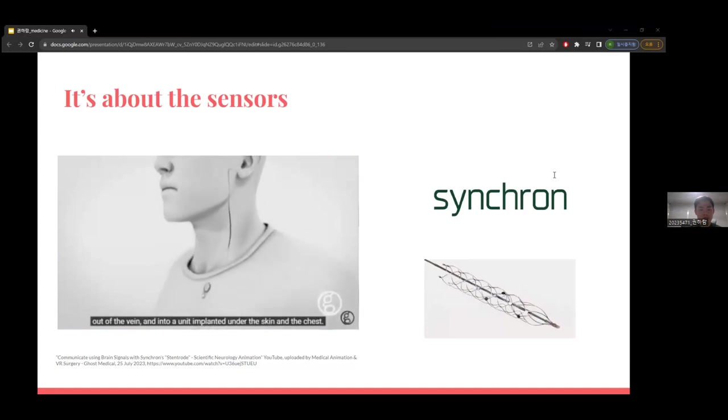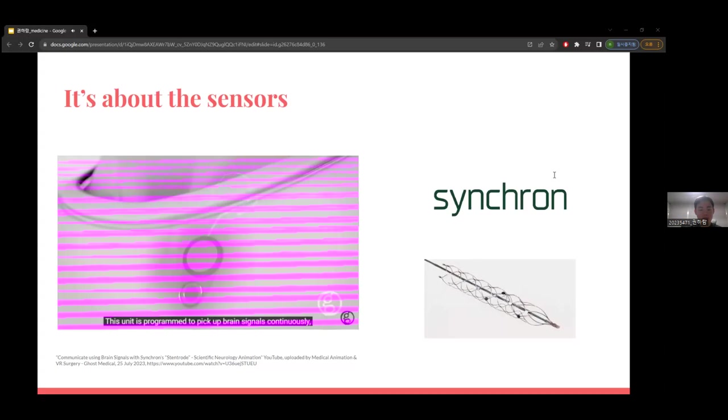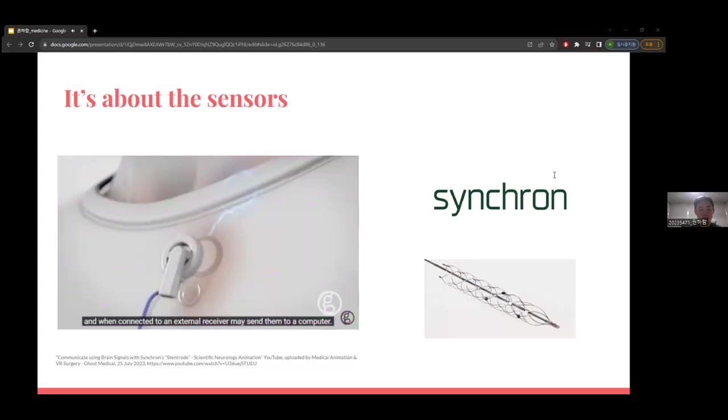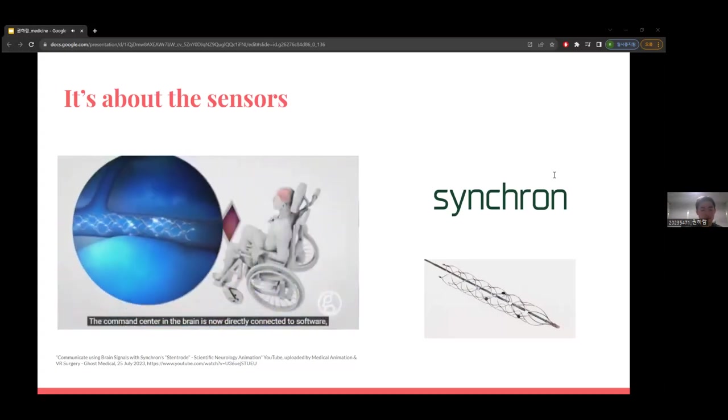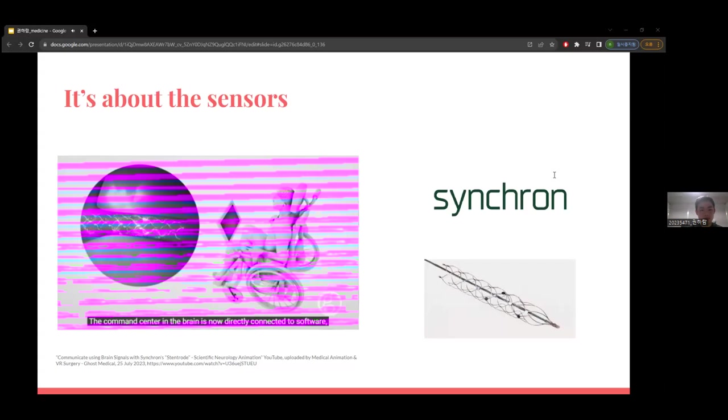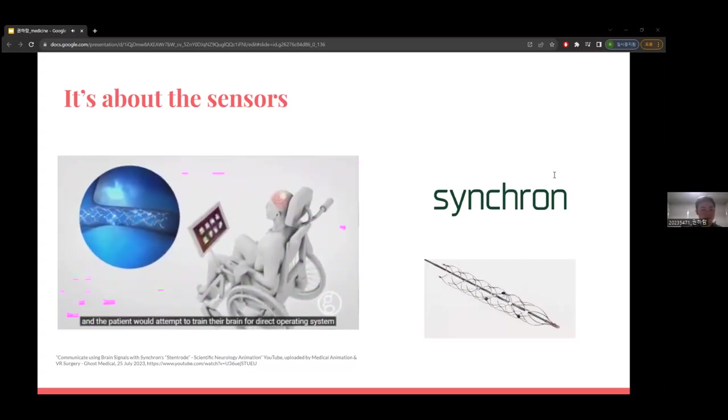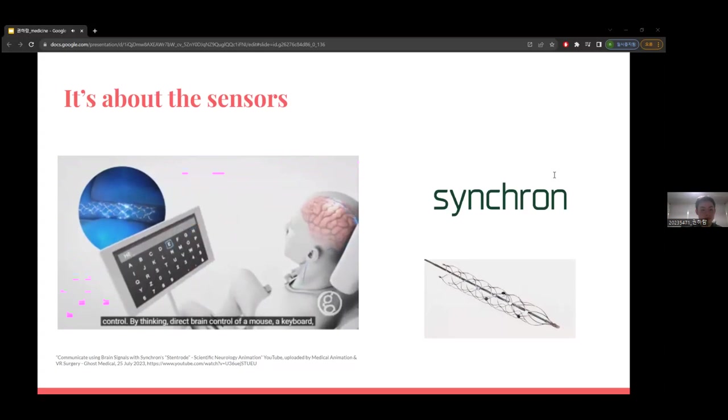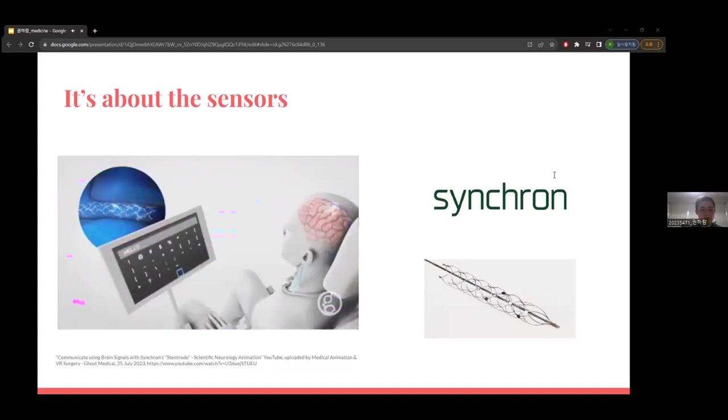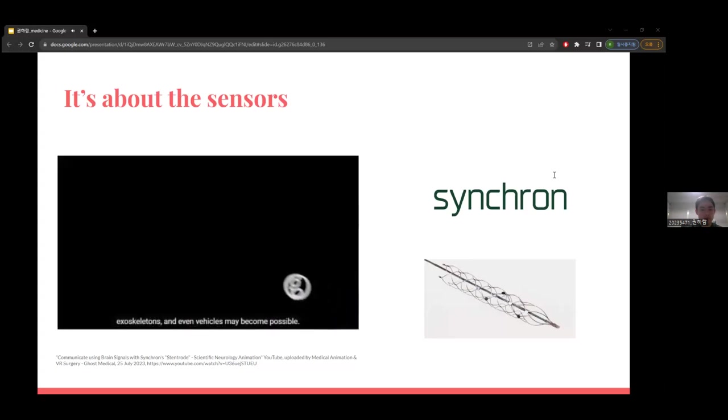The sensors are placed adjacent to the motor cortex control center. The patient may be paralyzed, but their motor control center can still be activated by thinking. The system transmits these brain signals out of the brain, into a unit implanted under the skin in the chest, which sends them to a computer. Direct brain control of a mouse, keyboard, exoskeletons, and even vehicles may become possible.